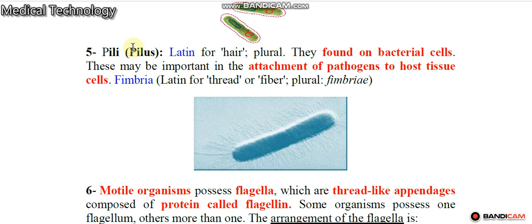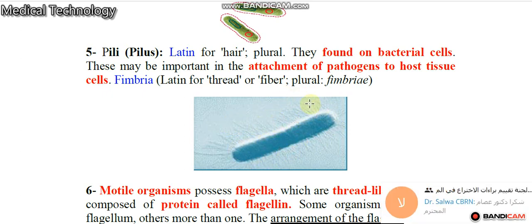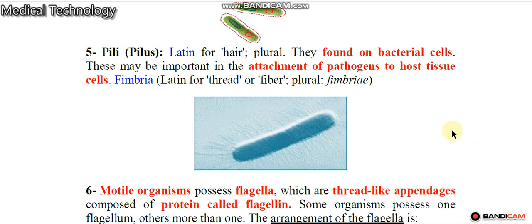Fimbriae — singular fimbria, from Latin meaning 'hair' — are found on bacterial cells on the surface. They are very important for attaching the bacteria to host cells.